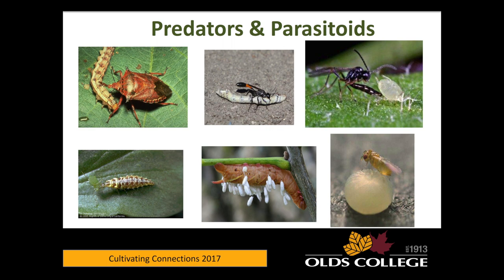Here's Trichogramma parasitizing a caterpillar egg — the egg is bigger than the adult wasp. They're phenomenal animals. The vast majority of wasps we see out there are not yellow jackets — they're parasitoids.